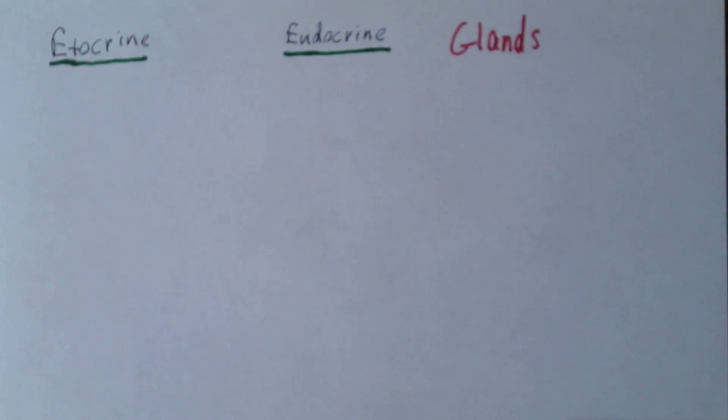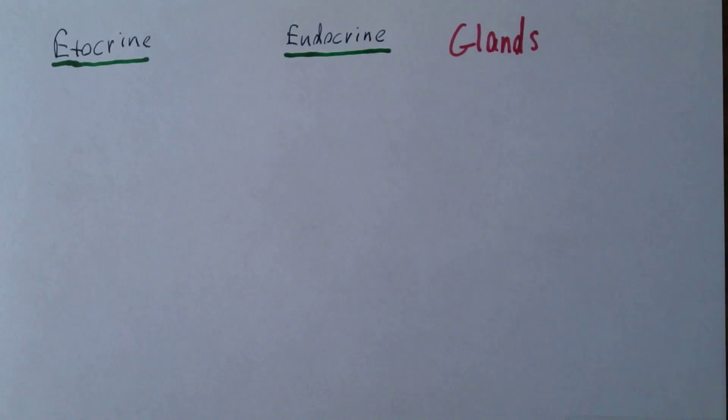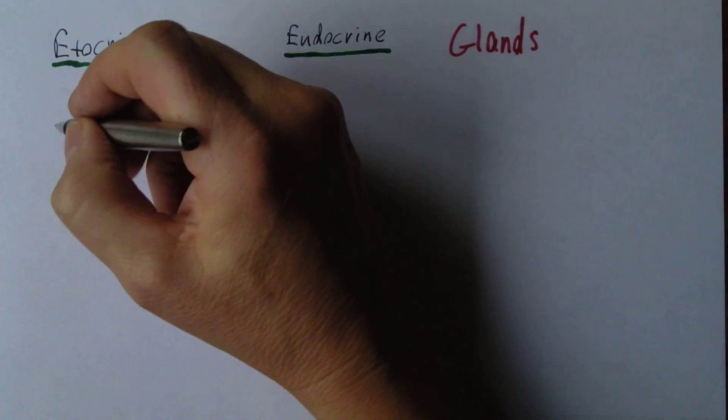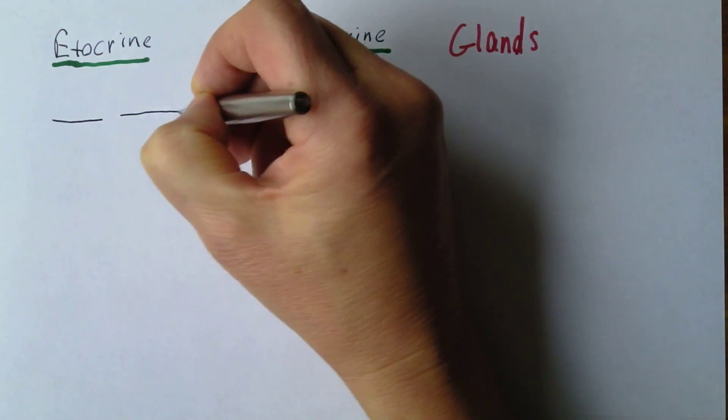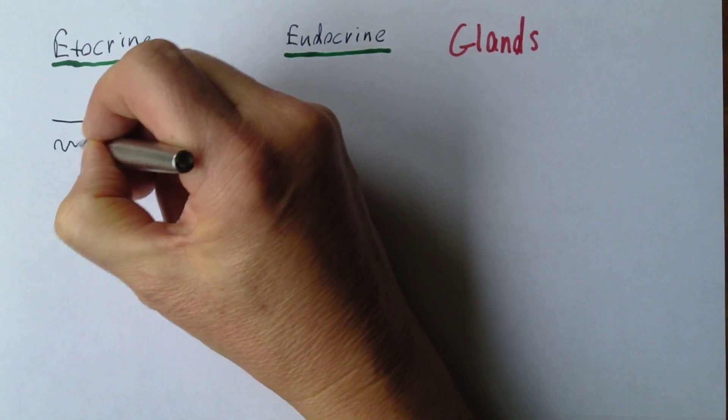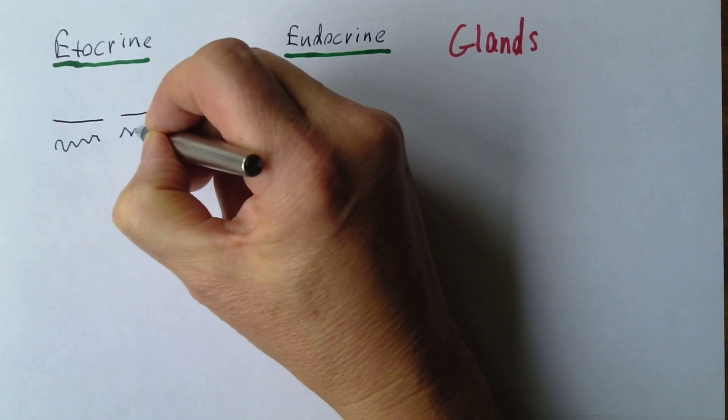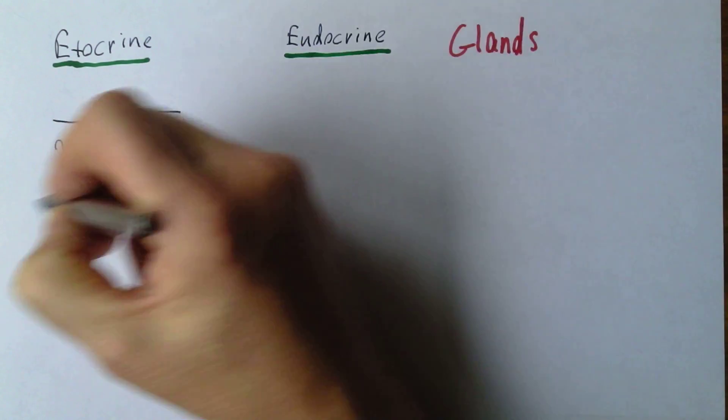So an exocrine gland will excrete its product via a duct. There will be some duct that allows the product of the gland to escape. So for example, if we think about the surface of the skin, there we have the surface and the epidermis, and below that we have the dermis.